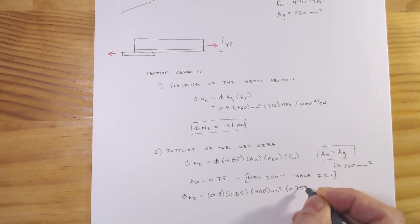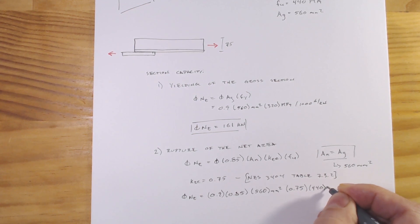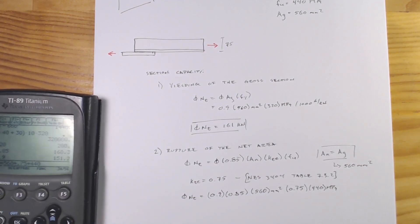Let's just quickly work out what that capacity is. Times 0.75 times 440, just plugging it in here and we'll divide by 1000.